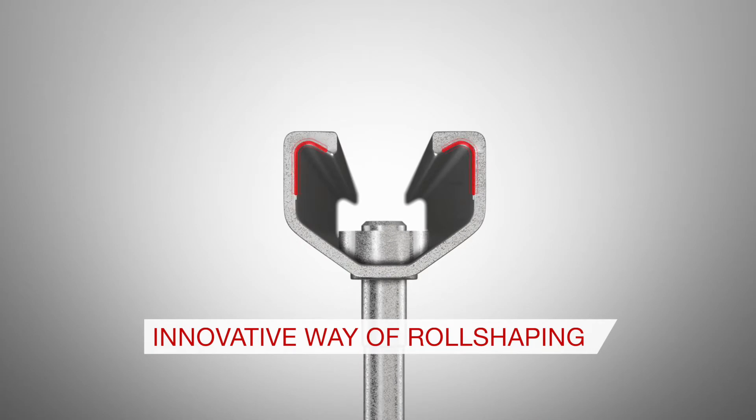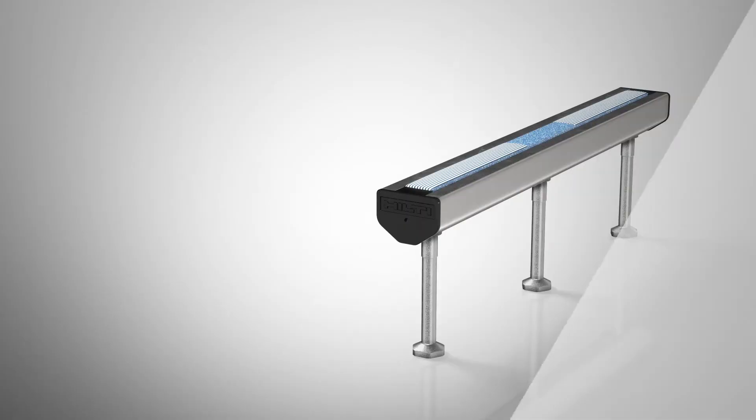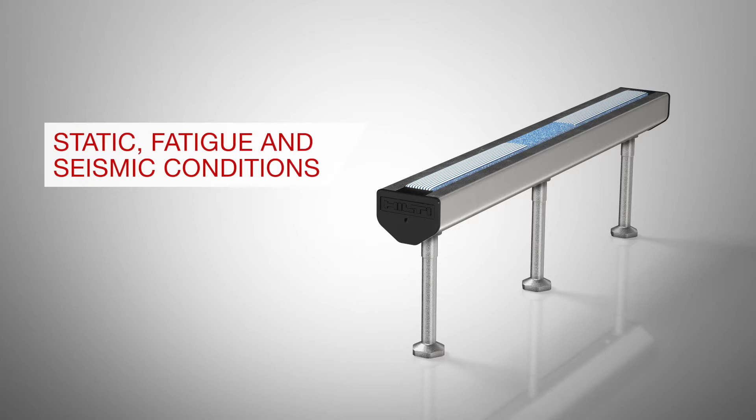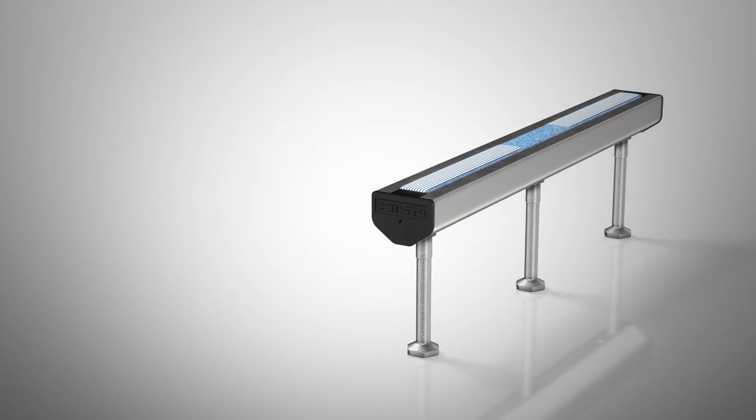TCRS is an innovative way of roll shaping and allows solid geometries combined with high precision. This leads to high performance in all directions and is approved for static, fatigue and seismic conditions.